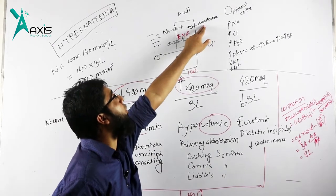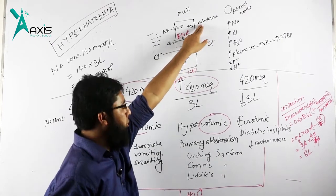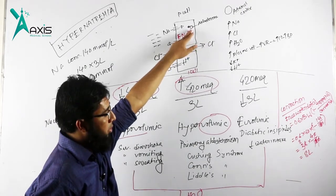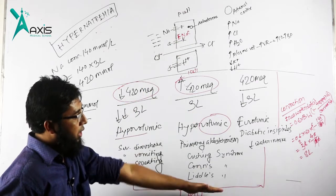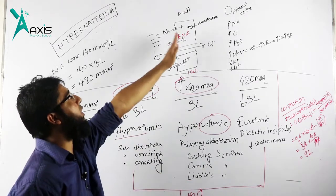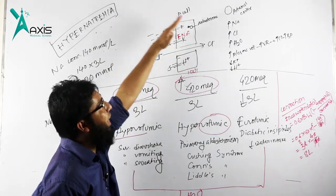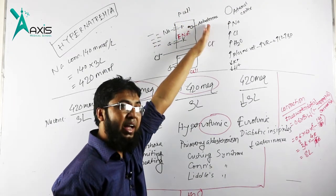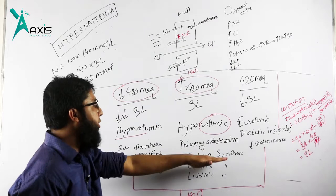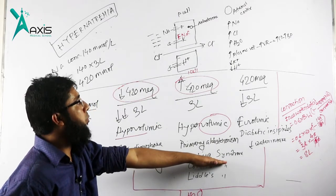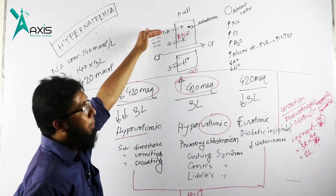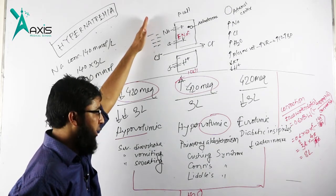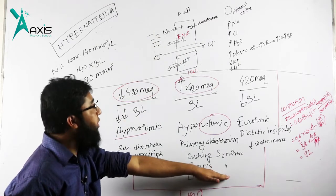In Conn syndrome, there is absolute increase of aldosterone. And in Liddle syndrome, there is receptor hypersensitivity. In all cases, we need adrenolytic drugs or aldosterone antagonist. For Cushing syndrome, we need to do bilateral adrenalectomy, medical or surgical.